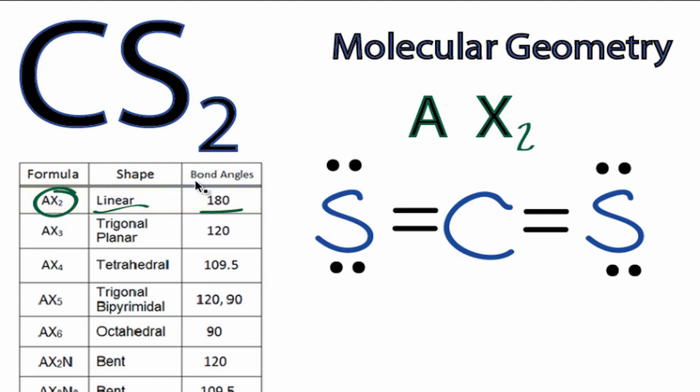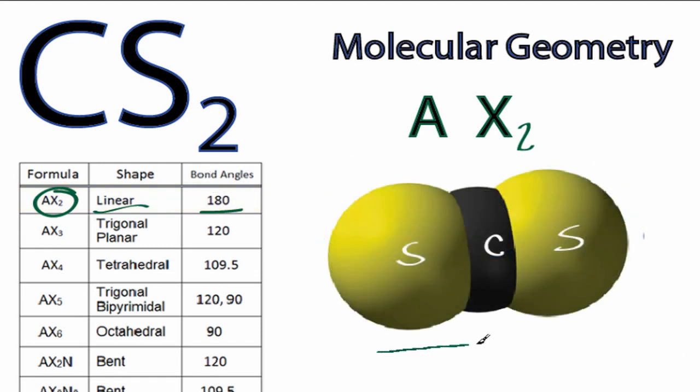If we go back to our three-dimensional structure, that 180 degrees is because it's in a straight line. That's the molecular geometry for CS2.